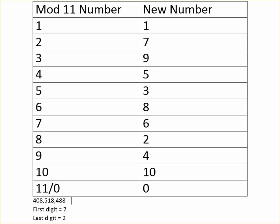Getting those two numbers should be simple and you should already know how to do that. Now, in order to get the middle digit — which is the hard part — it's going to require the use of this table here. I'm using a math formula called mod 11. If you've ever tried to figure out if a number was divisible by 11, you've probably used this method before. Basically, you take each digit starting on the right side and alternate subtracting then adding until you reach the end to get a final number.